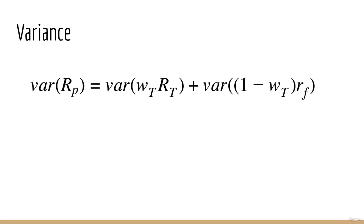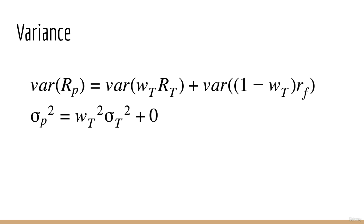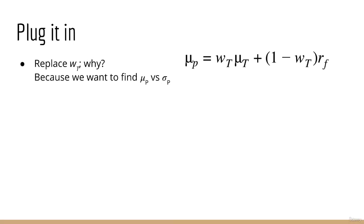For the variance, we take the variance of both sides. Since the tangency portfolio and the risk-free asset are independent, the variance of the sum becomes the sum of the variances — there is no correlation. Also note that the risk-free asset is not random and its variance is zero. Therefore the variance of the mixed portfolio is just w_t² times the variance of the tangency portfolio. Since everything is squared, we can take the positive square root of both sides to get a simple linear relationship between the standard deviations, and we can express w_t as the ratio σ_p over σ_t.